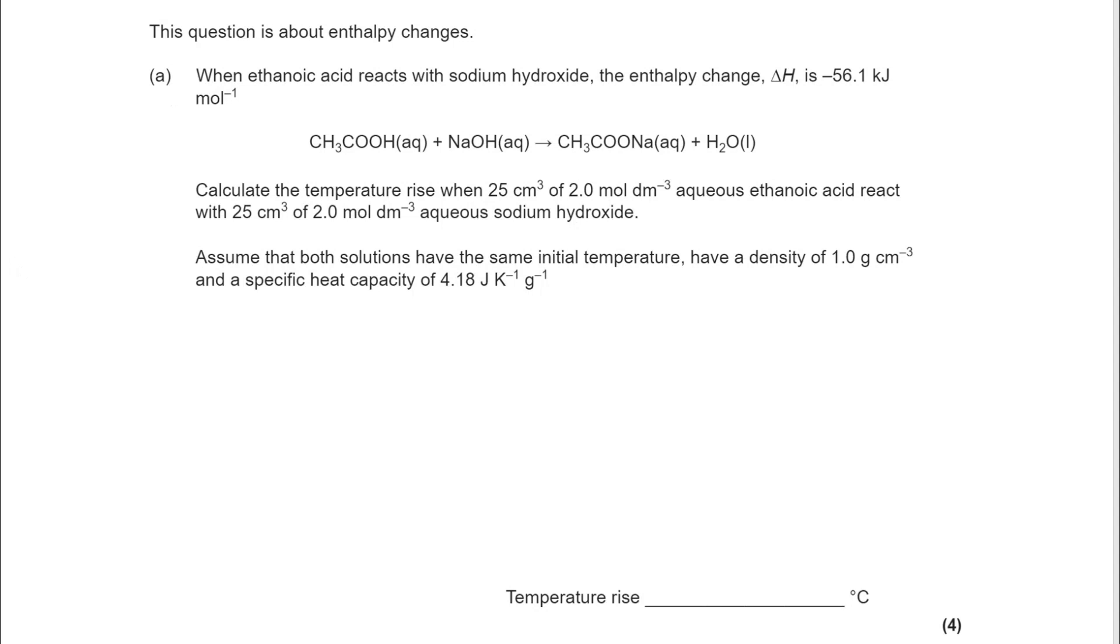Q = MC delta T questions are very common, but this one is being done in a slightly unusual way. You're not being given the Q value, you're going to have to work out the Q value so that you can work out delta T. So Q comes from a different route. Let's start off putting Q = MC delta T down and work out exactly what we have.